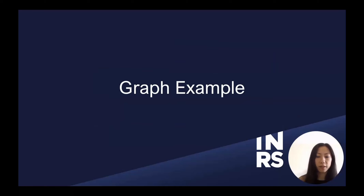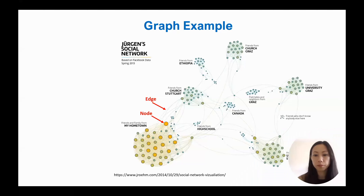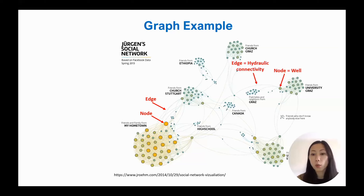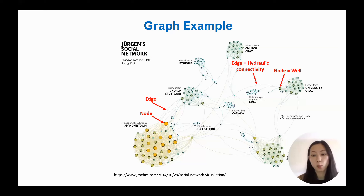Before showing our workflow, I'd like to give an example of what a graph is. Here you're looking at a social media network graph. What you see are nodes and edges — the nodes are individuals and the edges represent connections between people. They know each other, there's a connection; they don't know each other, there's no edge. We apply the same concept: we represent nodes as wells, and edges connect these wells based on some kind of hydraulic or spatial conductivity that we define.